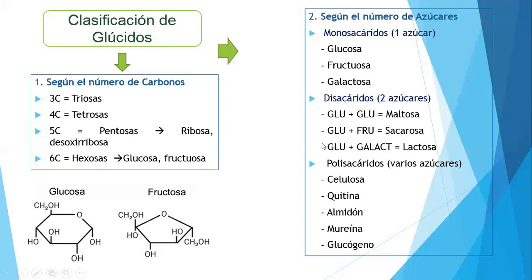Recordemos: glucosa más glucosa da maltosa; glucosa más fructuosa da sacarosa; glucosa más galactosa da lactosa. Los polisacáridos están formados por largas cadenas de azúcares: la celulosa en la pared celular de los vegetales, la quitina en la pared celular de los hongos y en el exoesqueleto de los artrópodos, el almidón como reserva de las plantas, la mureína o peptidoglucano en la pared celular de las bacterias, y el glucógeno como reserva de los animales. Todos ellos son polisacáridos.